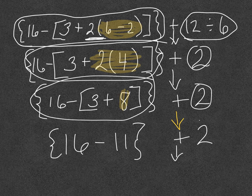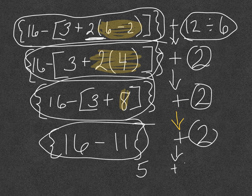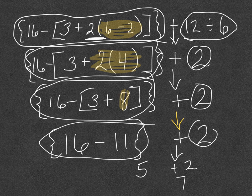Stop sign. Circle my terms. 16 minus 11 is 5 plus 2. My answer is 7. Now you try some on your own.